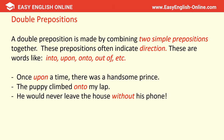A double preposition is made by combining two simple prepositions together — these often indicate direction. Words like into, upon, onto, out of. For example: 'Once upon a time, there was a handsome prince,' 'The puppy climbed onto my lap,' 'He would never leave the house without his mobile phone.'